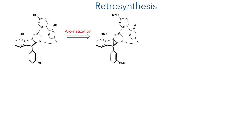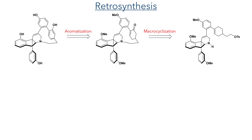So let's look at the retrosynthesis. The authors envisioned that the final stages of the synthesis would be the aromatisation of an enone group to install the strained aromatic ring. This would be derived from a macrocyclisation of an amine and an alkyl group — a key and difficult reaction step. The authors envisioned that using an alkyl chain with sp3 hybridised carbons would give the molecule enough flexibility to overcome the enthalpy and entropic barriers to form the macrocycle.